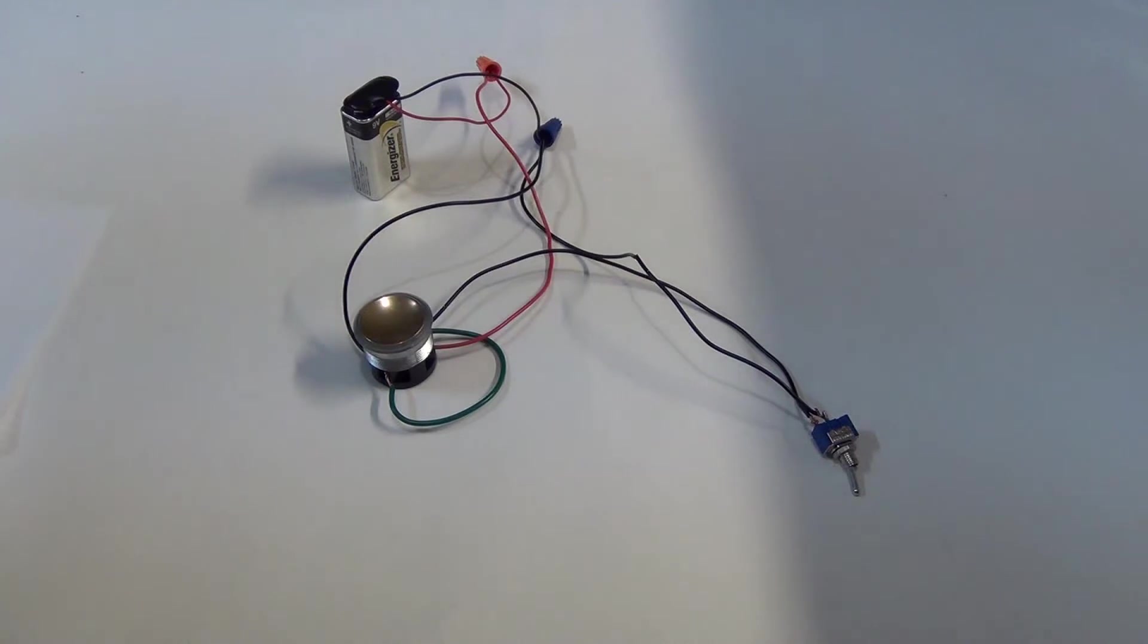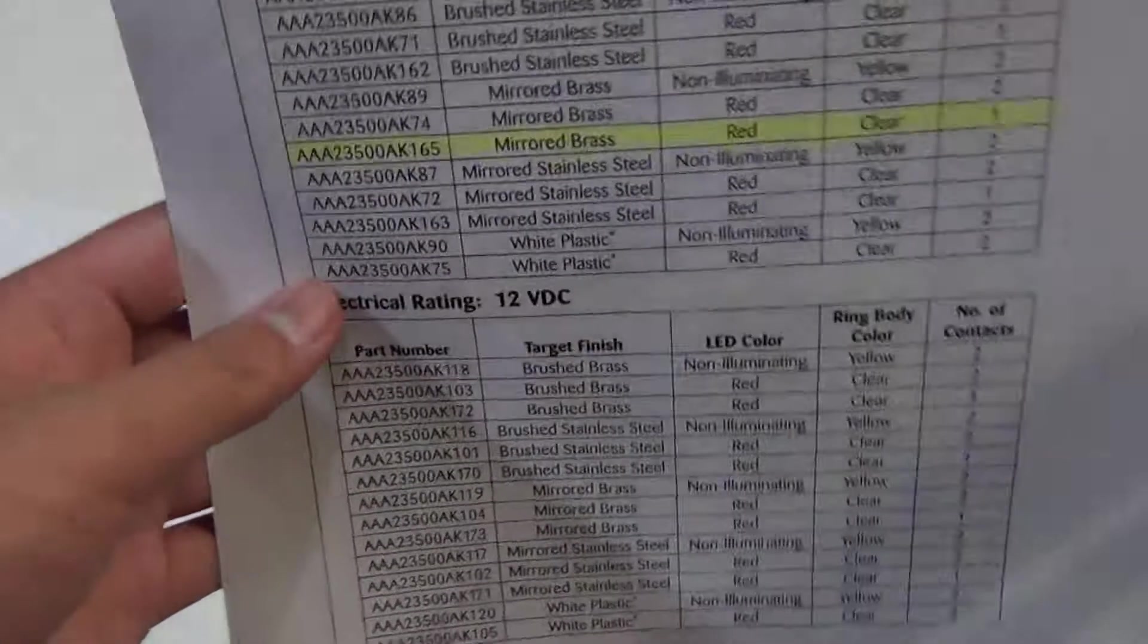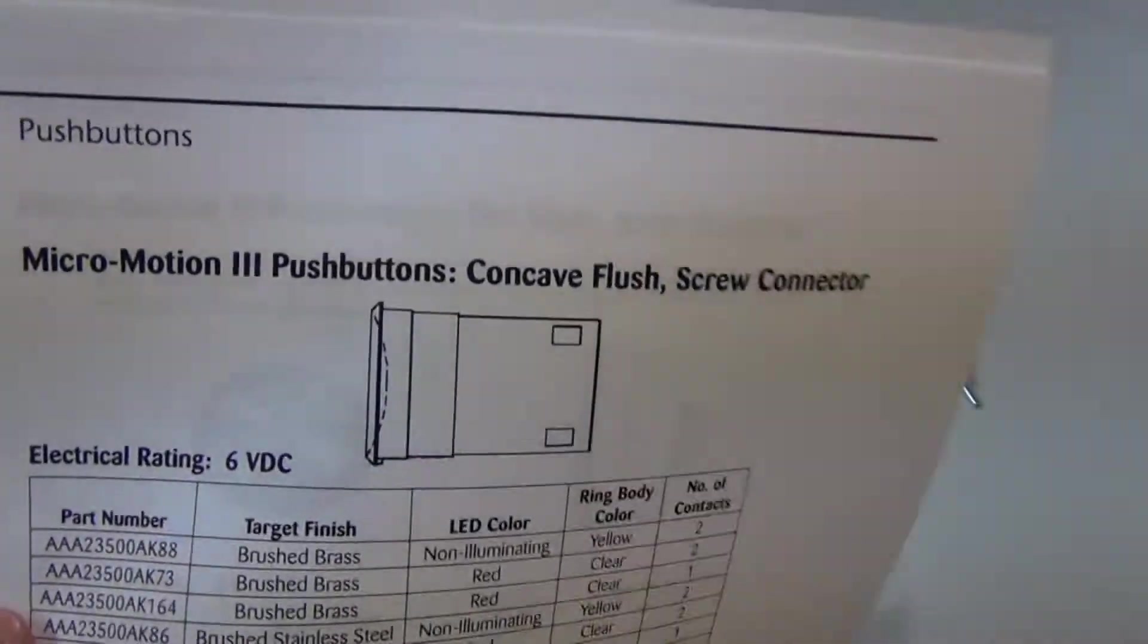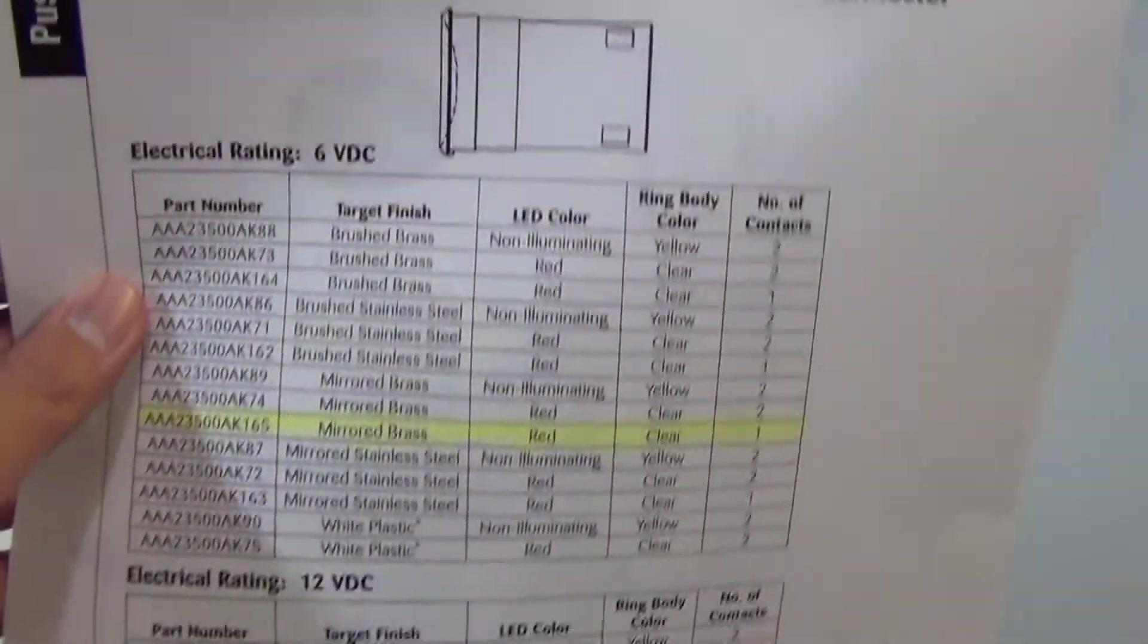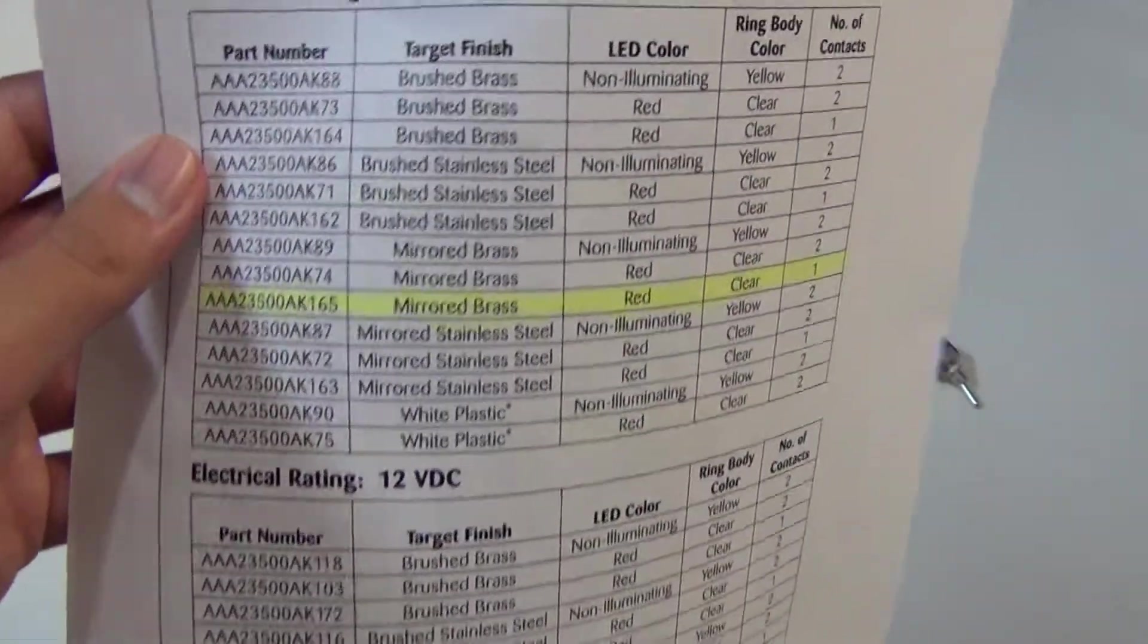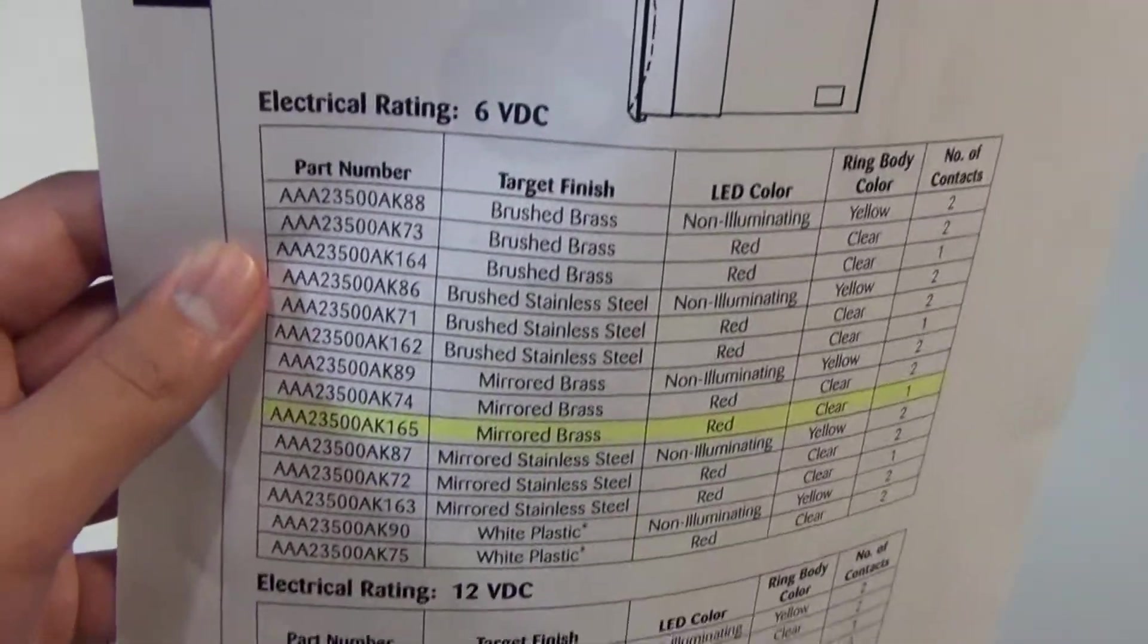Now I got this elevator button off of eBay. This one is a MicroMotion 3 pushbutton concave flush screw connector. This is the current one that's wired up right now, electric rating 6V DC.